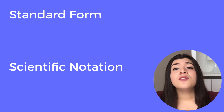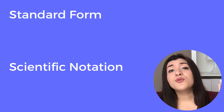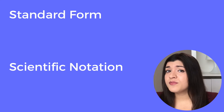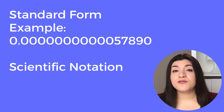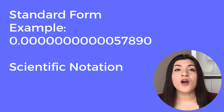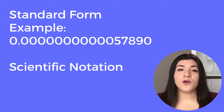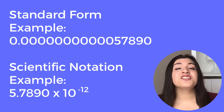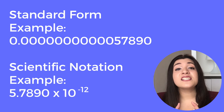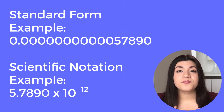Scientific notation is just an easier way to write really small or really large numbers. You will have two different forms. Standard form is just the expanded form of that number, or the number itself. And scientific notation is just the condensed form of that same number.